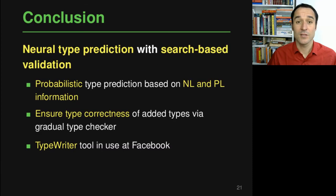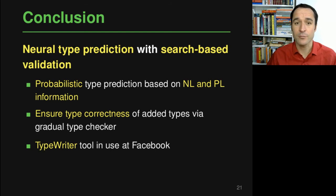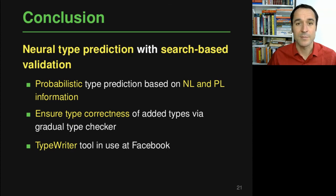In conclusion, I've presented TypeWriter — the first neural type prediction approach that uses search-based validation — combining a neural type prediction model with a gradual type checker to ensure every added type annotation yields a type-correct program. TypeWriter is being used at Facebook right now and has already annotated thousands of otherwise missing types. Thank you for listening; feel free to ask questions in the Q&A session at FSE, or email me or one of the other authors.